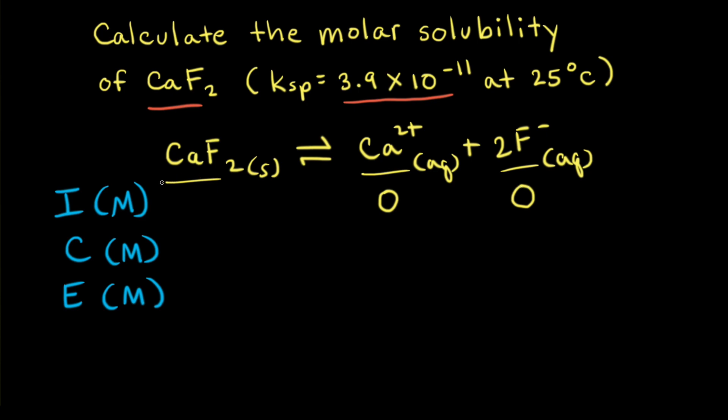Some of the calcium fluoride will dissolve, and we don't know how much, so I like to represent that by writing minus X on the ICE table, where X is the concentration of calcium fluoride that dissolves.